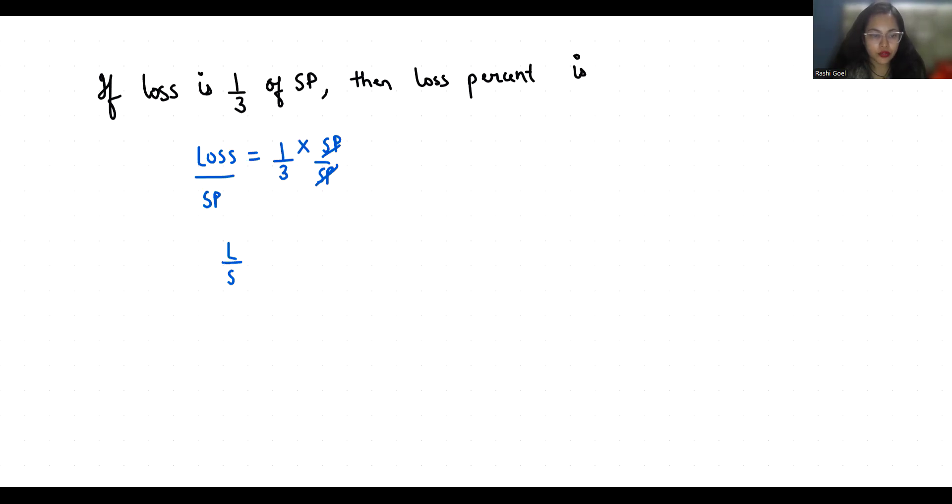So we can say that we have a loss when our selling price is 3. SP is selling price here.